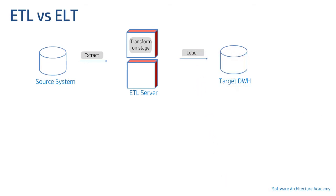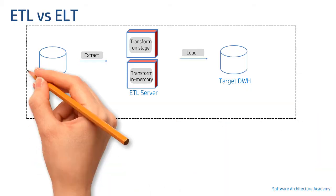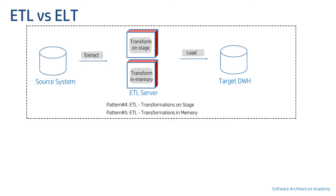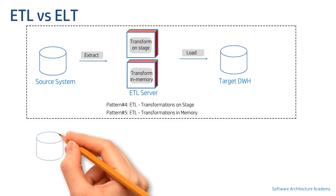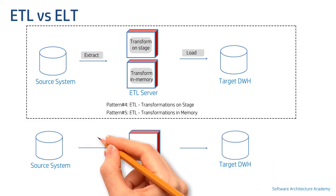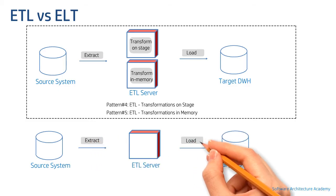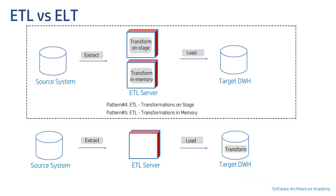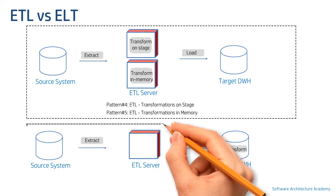Two variants of this are whether the transformation is performed in a dedicated stage on disk — pattern 4 — or if it is performed in memory of the ETL server — pattern 5. For ELT, as the sequence suggests, the data is first loaded into the data warehouse and transformation is then performed. ELT is best used when the data is enormous. That was pattern number 6.